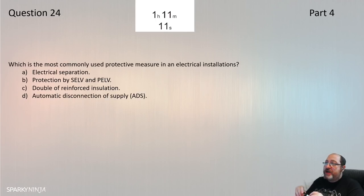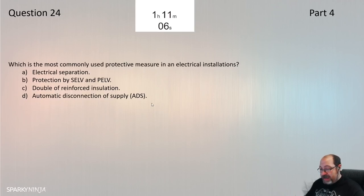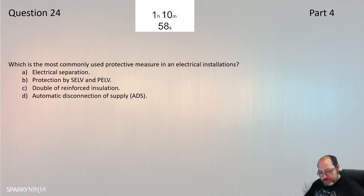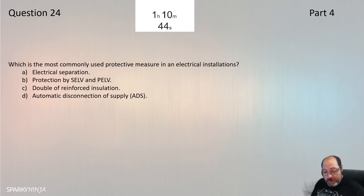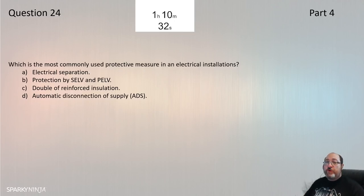Question 24: Which is the most commonly used protective measure in an electrical installation? That's obviously automatic disconnection of supply (ADS). Regulation 410.3.3 introduces the general protective measures, and the note states: in electrical installations the most commonly used protective measure is ADS. Question 24 is D.